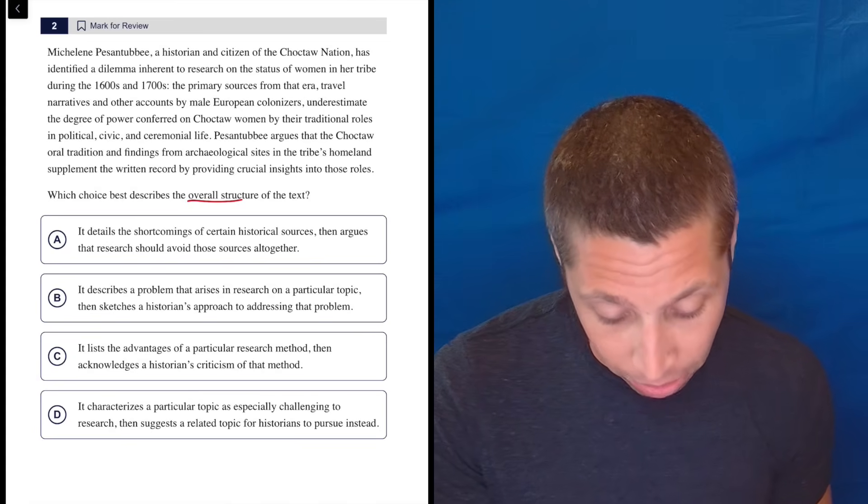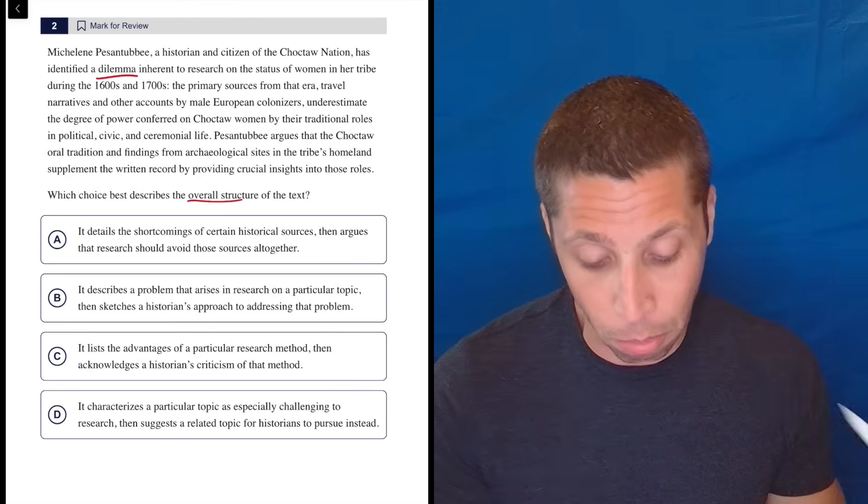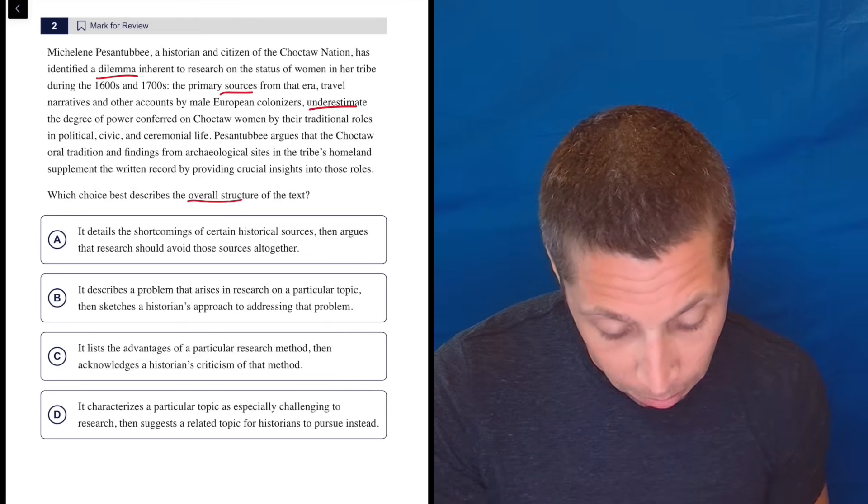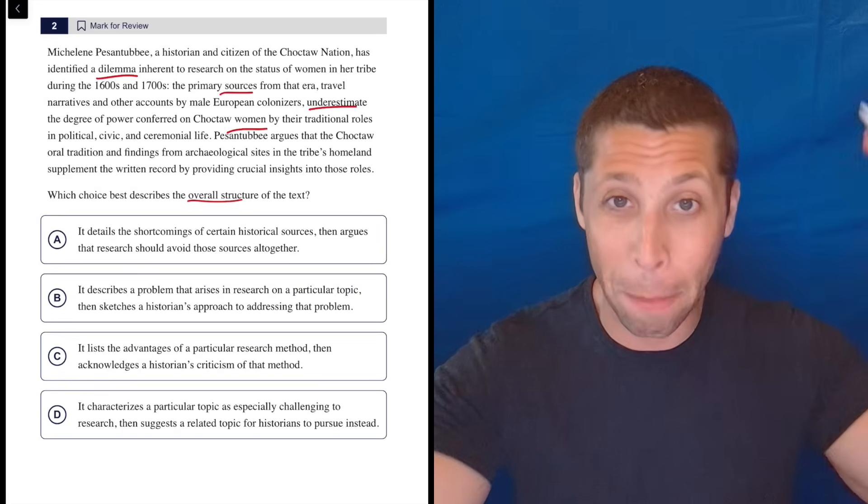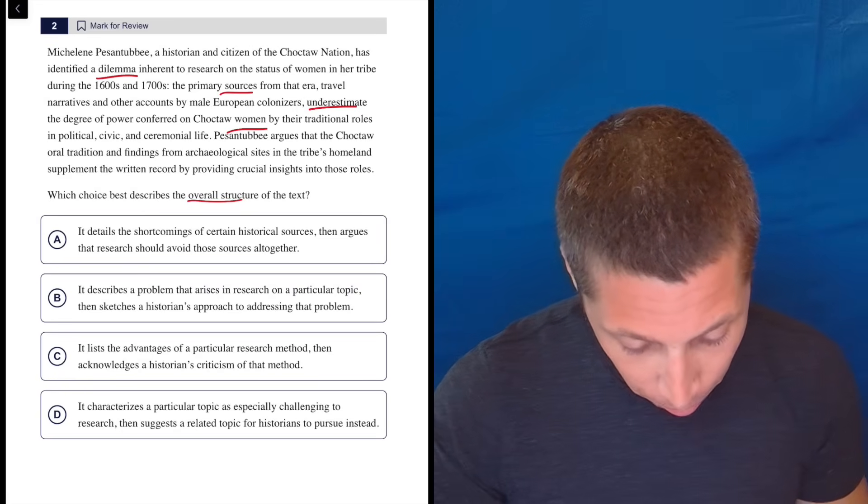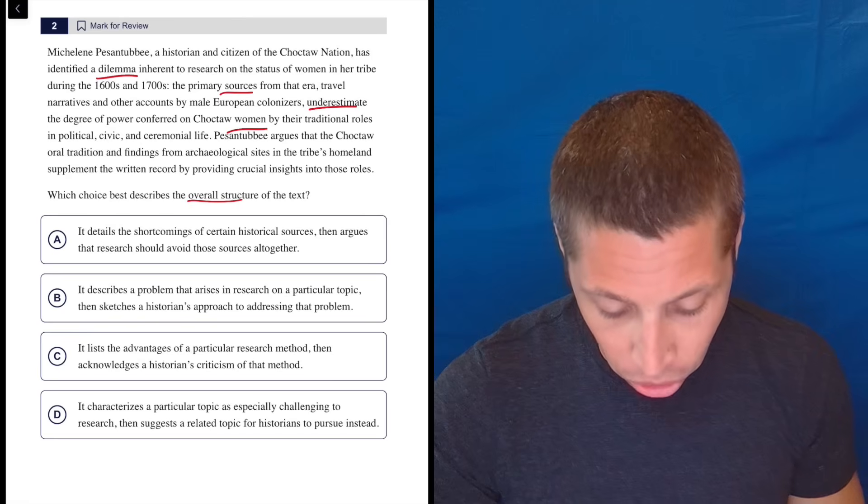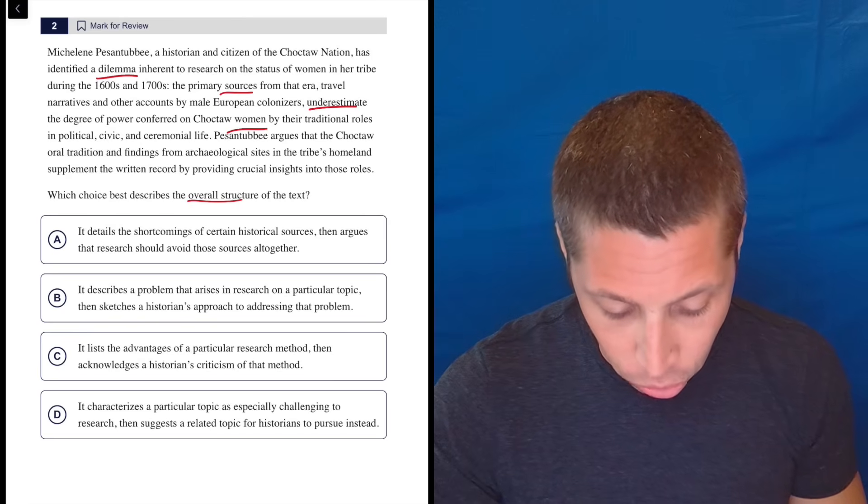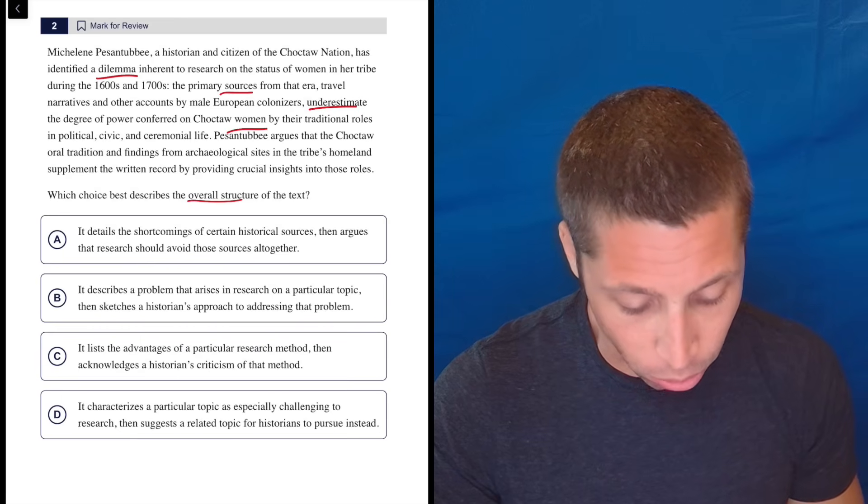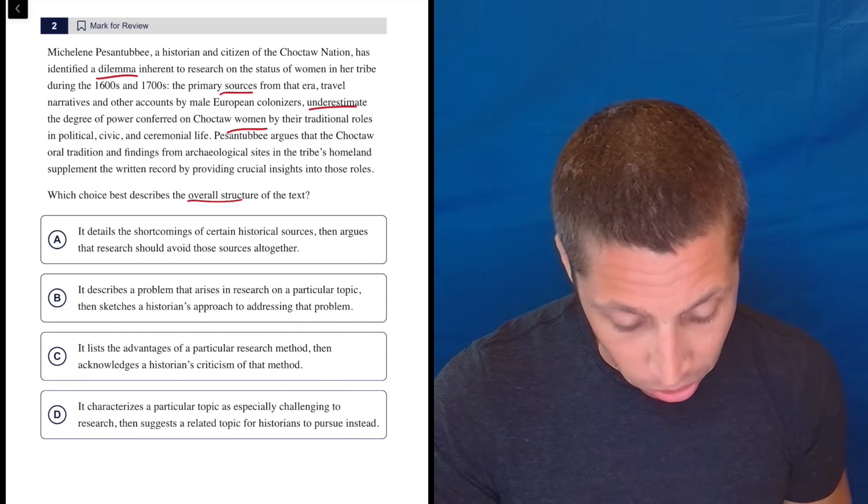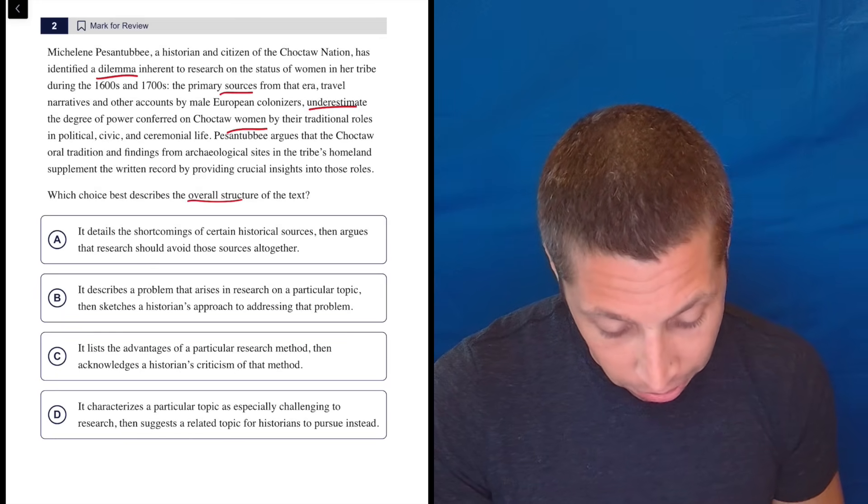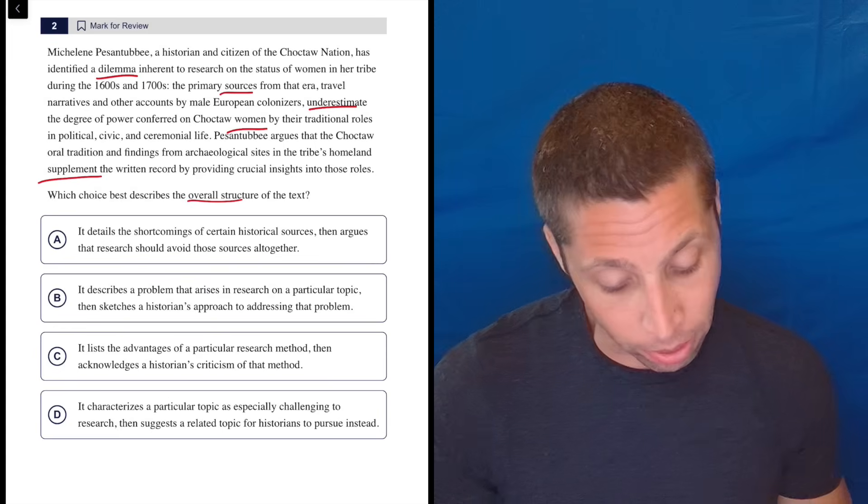But I get that there's a problem, right? A dilemma is a problem. And so the sources underestimate women. Strong words pop out right there. That's my dumb summary in a way. Well, let's see what the last sentence says. This person argues that the Choctaw oral tradition and findings from archaeological sites in the tribe's homeland supplement the written record by providing crucial insights into those roles. So the primary sources underestimate women, but this kind of feels like a but. Notice these other things supplement the written record.